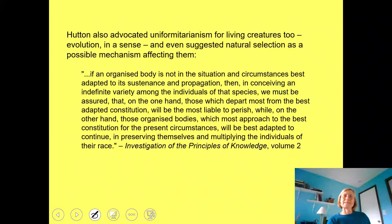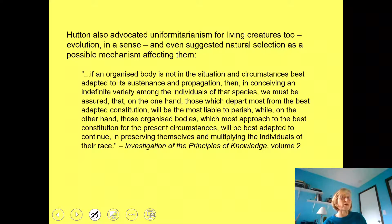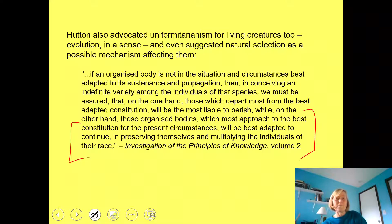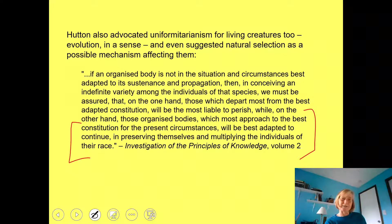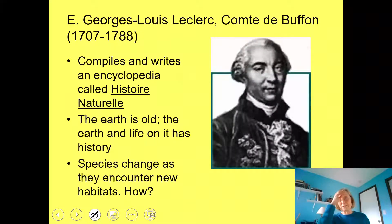What does this have to do with Charles Darwin and evolution? This idea really influenced Darwin — the idea that change is slow, that little changes accumulate to lead to big changes. Darwin started believing the same about organisms: small changes accumulate to lead to big change over time. Hutton also suggested that organisms evolve and even proposed a mechanism that sounds a lot like natural selection — ideas that look a lot like Darwin's work in his most famous book, Origin of Species.